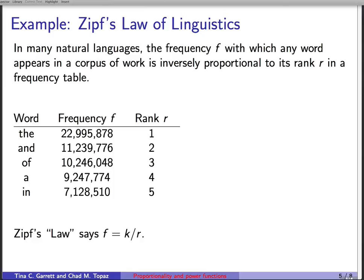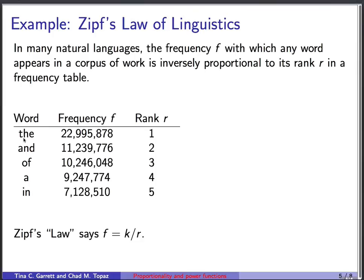They'll use software to do it. But they can count all of the words that appear in all of those articles and books. And they can count the frequency with which each word appears. So for instance, the word the appears almost 23 million times. And so the frequency is about 23 million. And that was the most common word. So its rank is one. The second most common word, rank two, turned out to be the word and, with a frequency of just over 11 million, and so on. And Zipf's law says basically that frequency is inversely proportional to the rank. Frequency equals a constant divided by rank. And this is approximately true in English and many other languages as well.